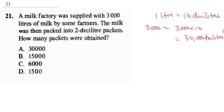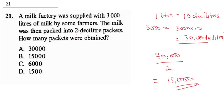Now we know we have 30,000 deciliters. We are going to pack this into two-deciliter packets, so we do 30,000 divided by two, and this gives us 15,000 packs. The correct answer here is B.